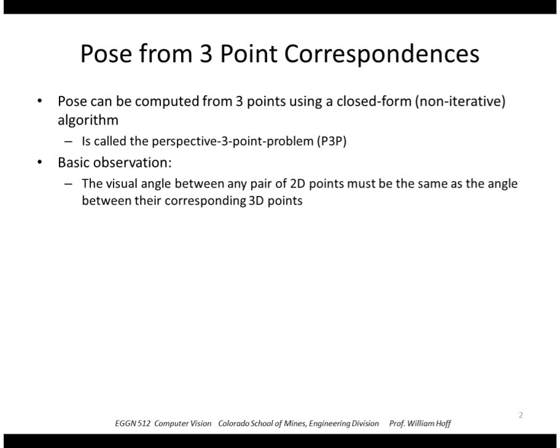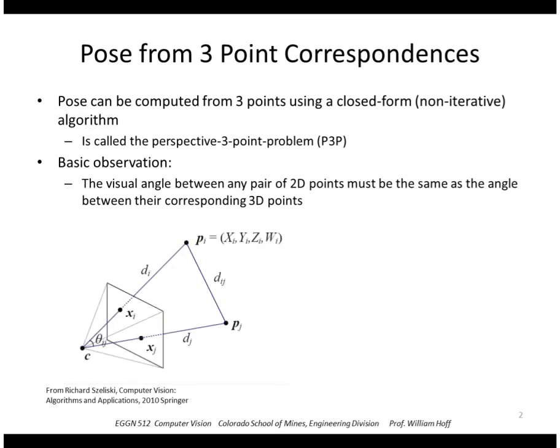The basic observation is that the visual angle between a pair of points must be the same as the angle to the 3D points. Little p and pi and pj here is the same as the visual angle to the image points, in this case xi and xj. We don't know the distances to those 3D points, but we do know the direction, and therefore we observe the visual angle.